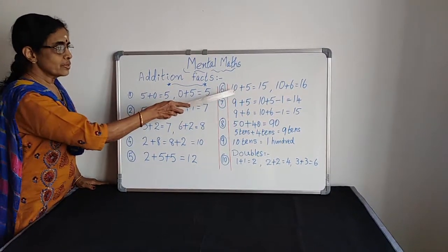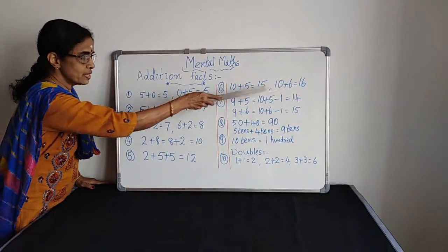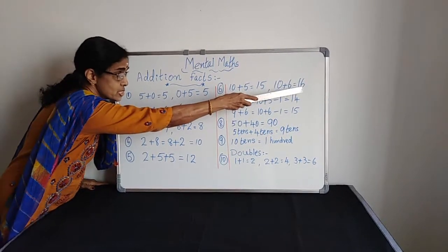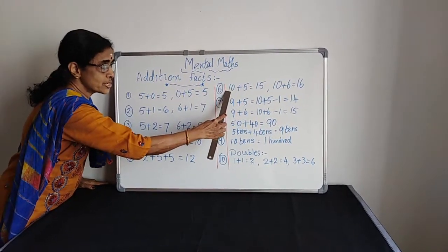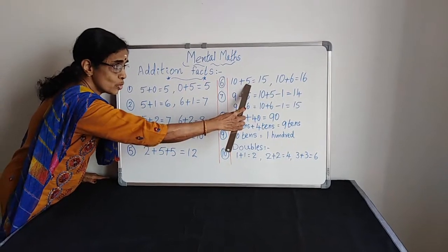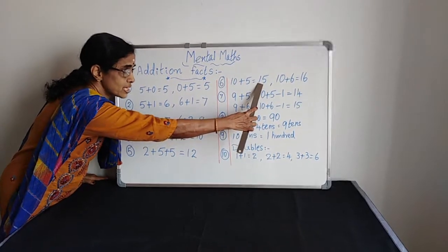Rule 6: 10 plus 5 equals 15, 10 plus 6 equals 16. 1 in the tens position and 5 in the ones position, that is why we are getting 50.